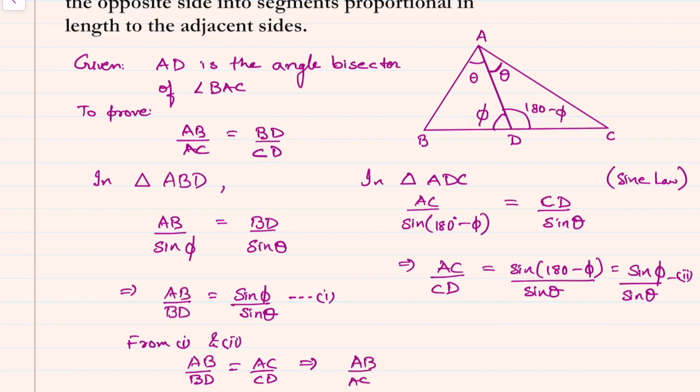So the bisector AD divides BC in such a ratio such that it is in the ratio of AB by AC. Hence proved.